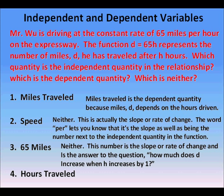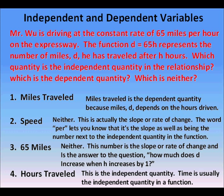65 miles per hour is neither the independent quantity nor the dependent quantity — it is the slope or rate of change. This number 65 is the answer to the question: how much does d increase when h increases by 1? Hours traveled is the independent quantity. Time is usually the independent quantity in a function or relation.